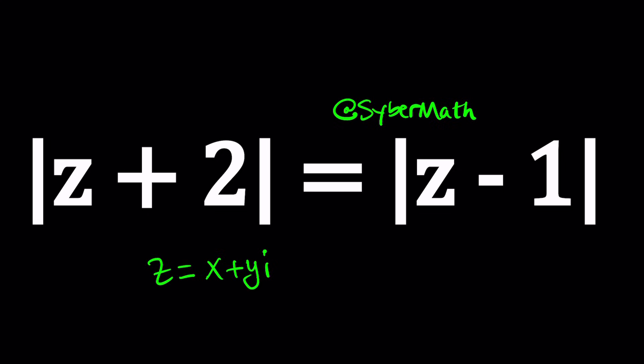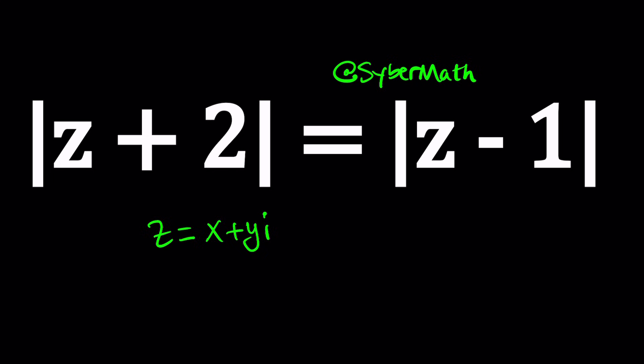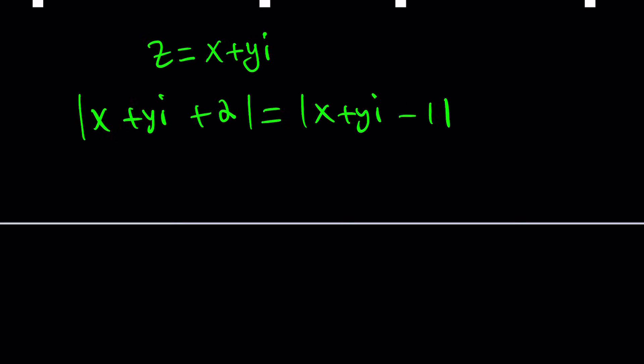Alright, let's see how this works. We're going to replace Z with X plus Y I on both sides. And then find the absolute values and see where we go from there. So let's go ahead and make the replacements. Now, we kind of need to organize this a little bit, because we want to find the absolute value, and the absolute value is found.